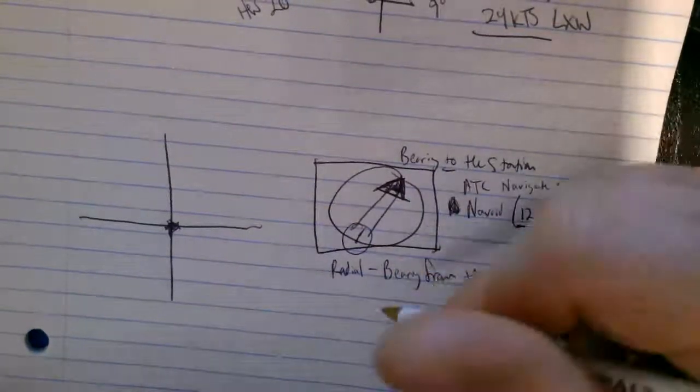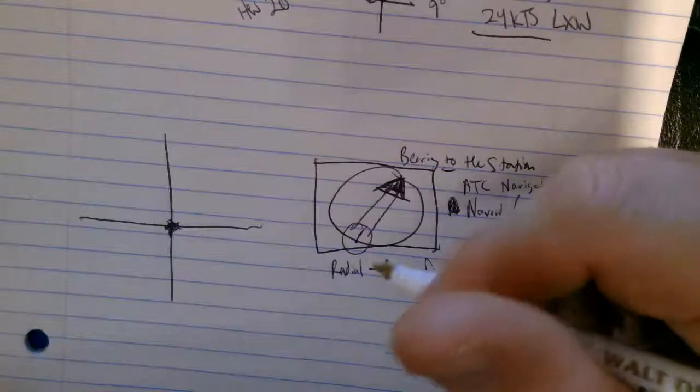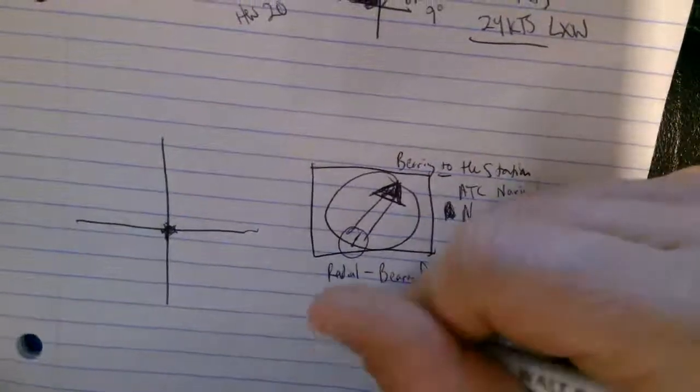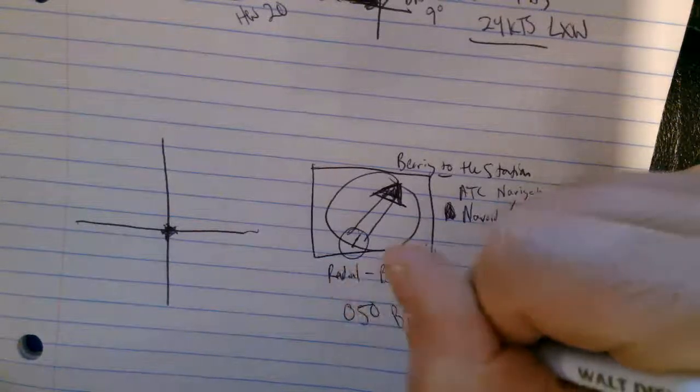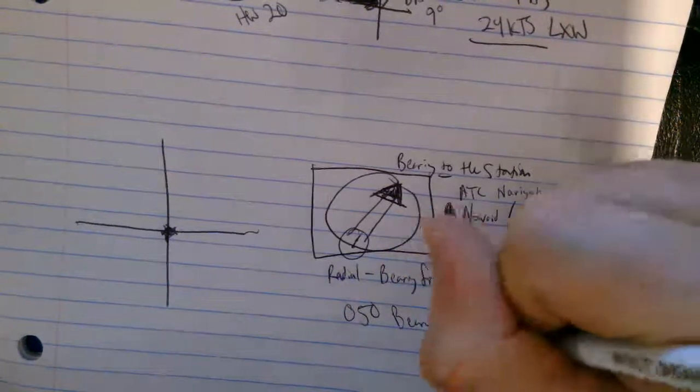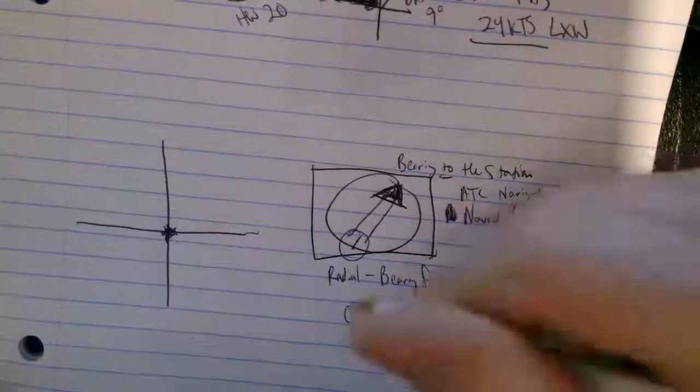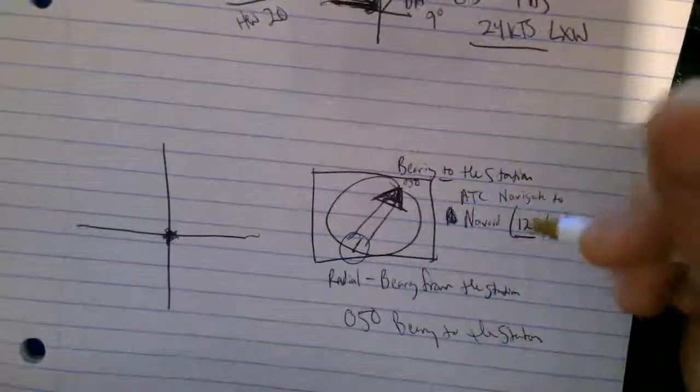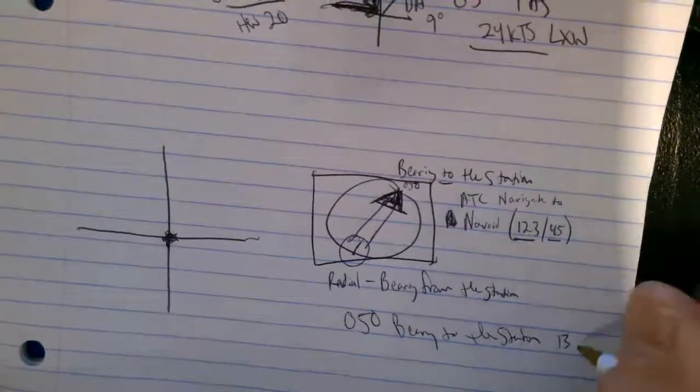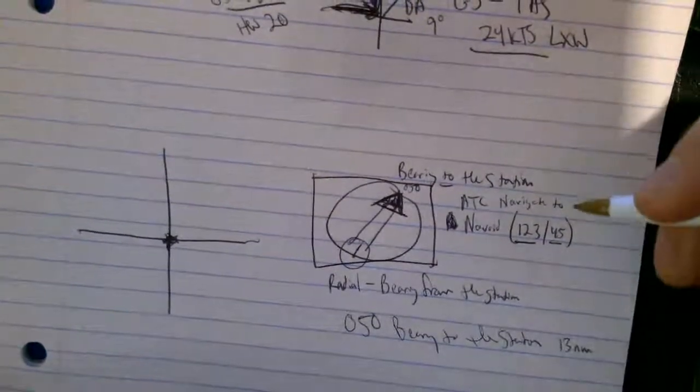And then maybe they'll say like, hey, you see that you're on the 0, 5, 0 bearing to the station. Well, that's basically saying it's 0, 5, 0 bearing to the station. And then they'll give you maybe like 13 nautical miles or something like that, okay?